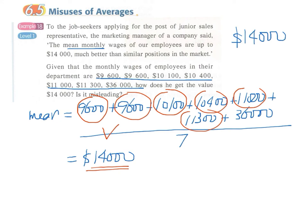Why? Because we have an extreme value here. This extreme value of $36,000 actually raises the mean salary of the company.